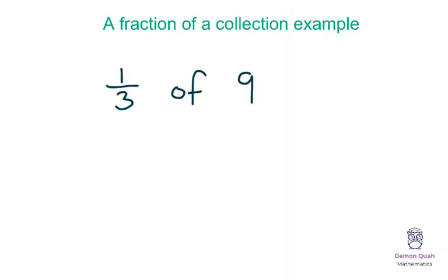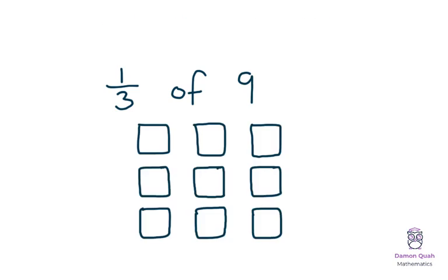We're going to look at some simple examples just to get the idea of what this is all about. So here is a fraction of a collection example. Let's say I have 9 items. So let's call them 9 squares and I want to find what is 1 third of 9.